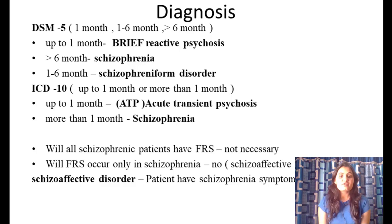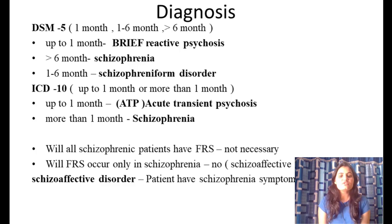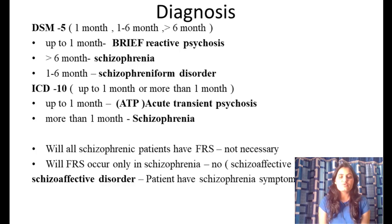Not all schizophrenic patients will have first rank symptoms, and first rank symptoms are not exclusive to schizophrenia — they can also occur in schizoaffective disorder. Schizoaffective disorder means the patient has both schizophrenia symptoms and bipolar disorder symptoms, i.e., mood disorder symptoms including mania and depression.